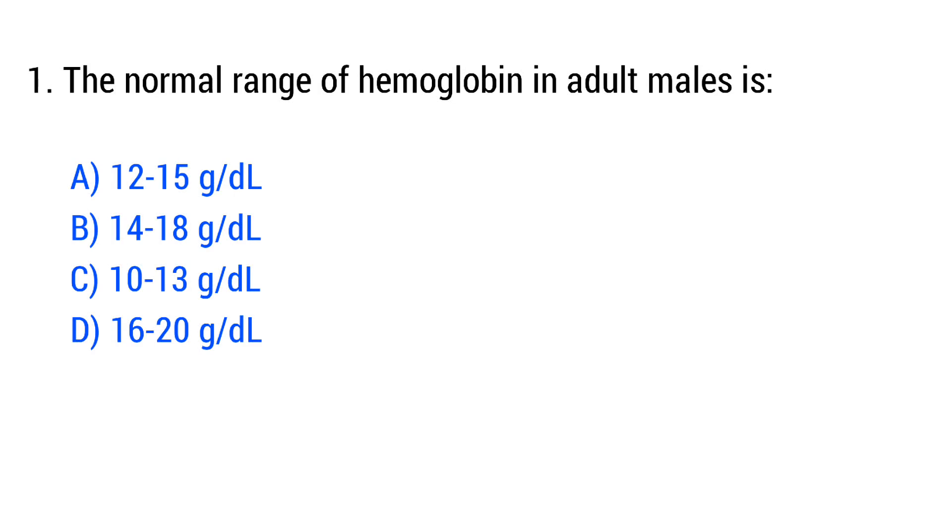Question number 1. The normal range of hemoglobin in adult males is? The right answer is Option B, 14 to 18 grams per deciliter.